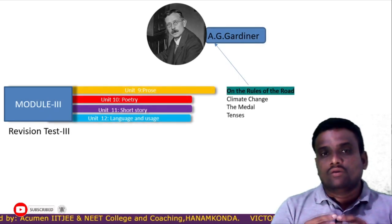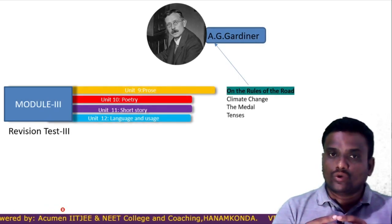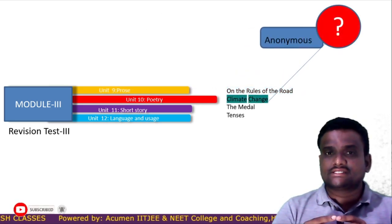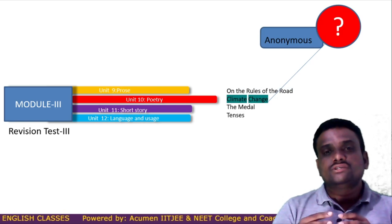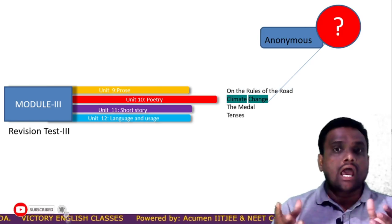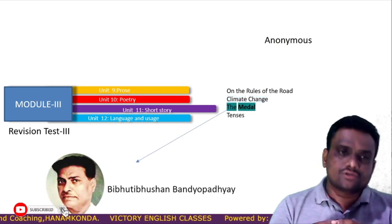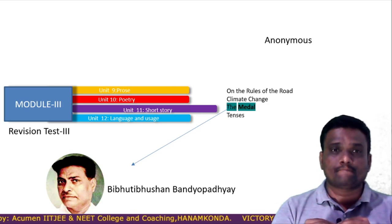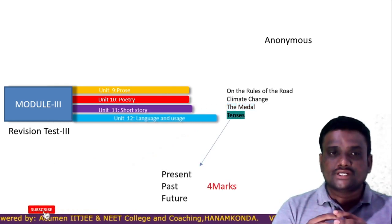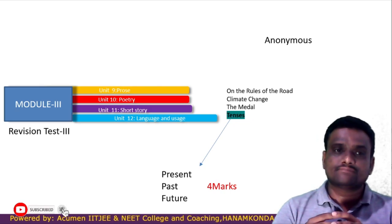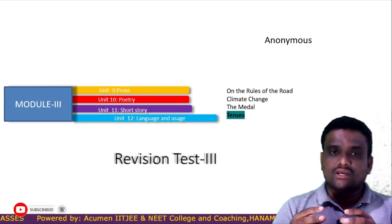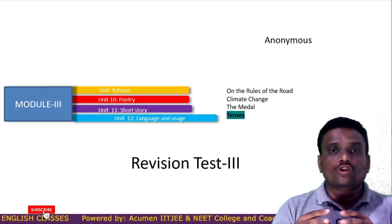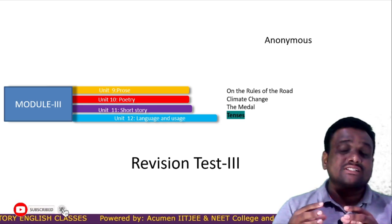Module number three. The prose is 'On the Rules of the Road' by A.G. Gardner. The poetry of module three is 'Climate Change' — there is no author for this poem; the author is anonymous. The short story is 'The Medal' by Vibhuti Bhushan Bandyopadhyay. Language and usage for this module is tenses. A revision test will also be conducted. Through unit 12, you will be getting four marks compulsory.